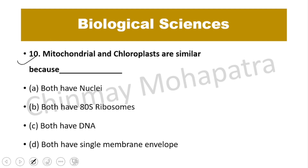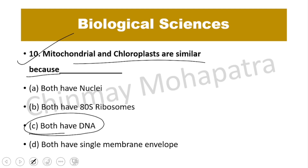Question number 10: Why are mitochondria and chloroplasts considered similar? Because these two organelles of the cell are semi-autonomous — both have their own DNA.